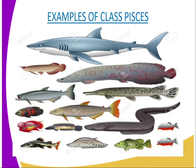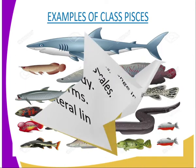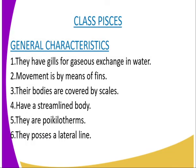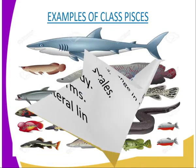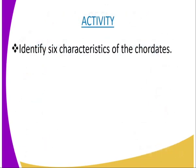Three, their bodies are covered by scales. Four, they have a streamlined body, as you can see. Five, they do not possess the middle or the external ear. Six, they possess a lateral line system for sensitivity. Seven, their heart consists of two main chambers — that is the auricle and the ventricle — with a single circulatory system. Another characteristic is that body temperature changes with the environment, meaning they are ectothermic. And their eyes are covered by a nictitating membrane for sensitivity.